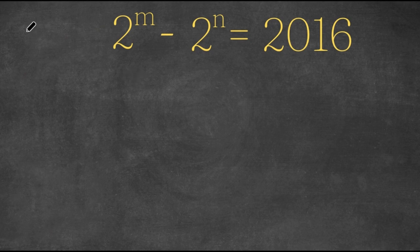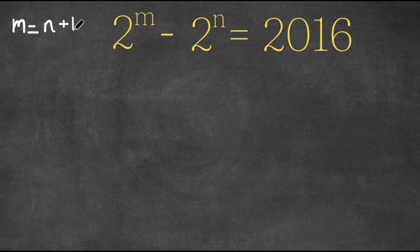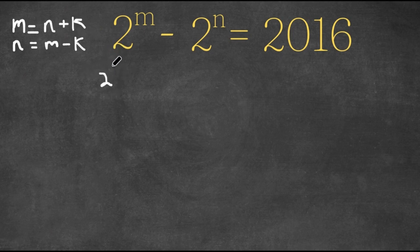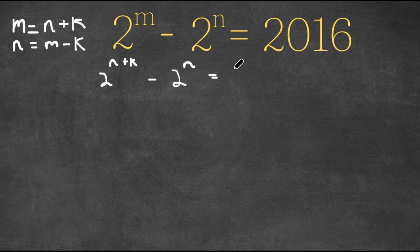So what I'm first going to do is I'm going to set m equal to n plus k, k being a constant. Now if this is true, then we also know that n is equal to m minus k, and k is a constant. So now what I'm going to do is I'm going to replace m with n plus k and rewrite this as 2 to the power of n plus k minus 2 to the power of n equals 2016.